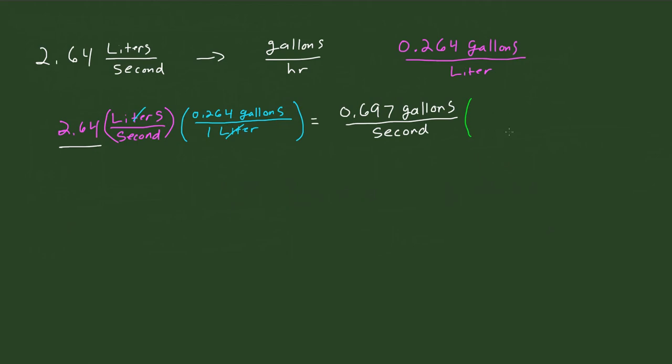So therefore, we want hours on the bottom. So what we do is, we know that hours has to end up on the bottom, hours. And obviously, in order for seconds to cancel out, we need to have seconds in the numerator here. So this would be 3,600 seconds for every hour.